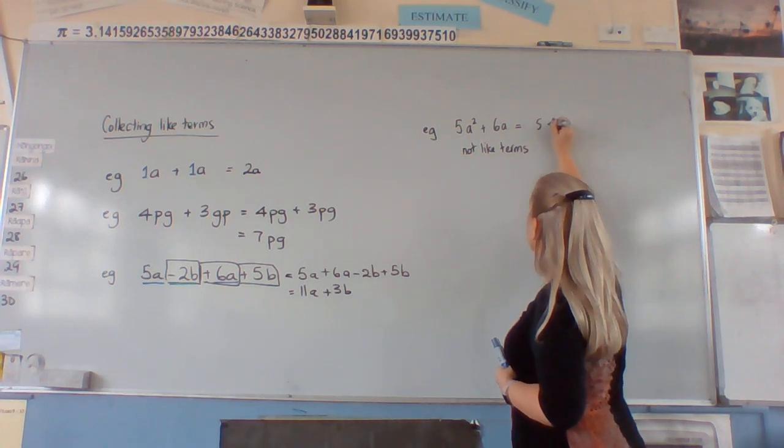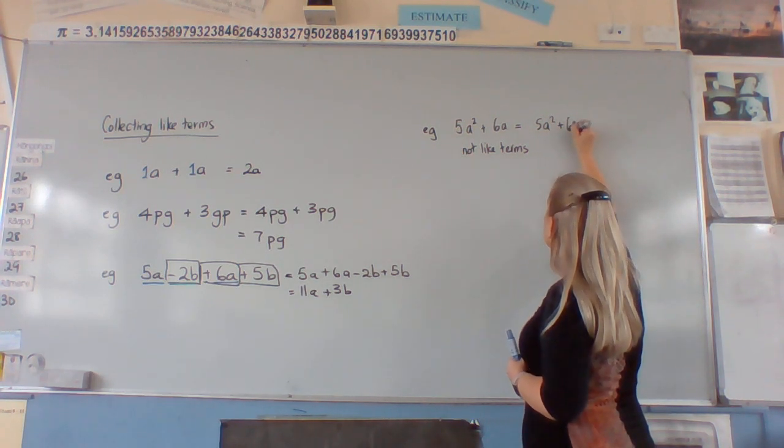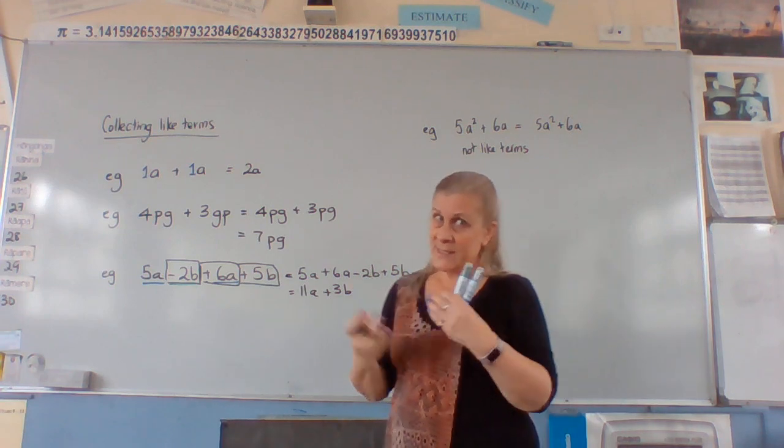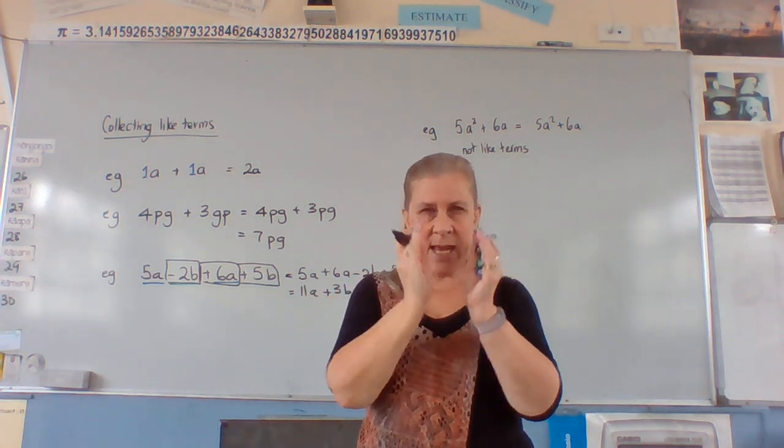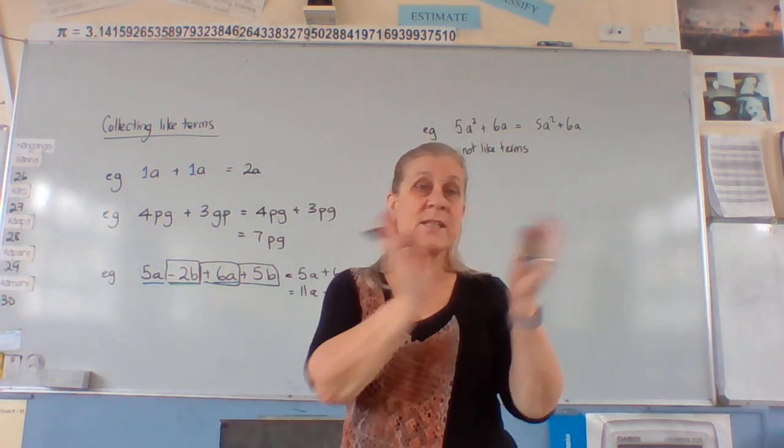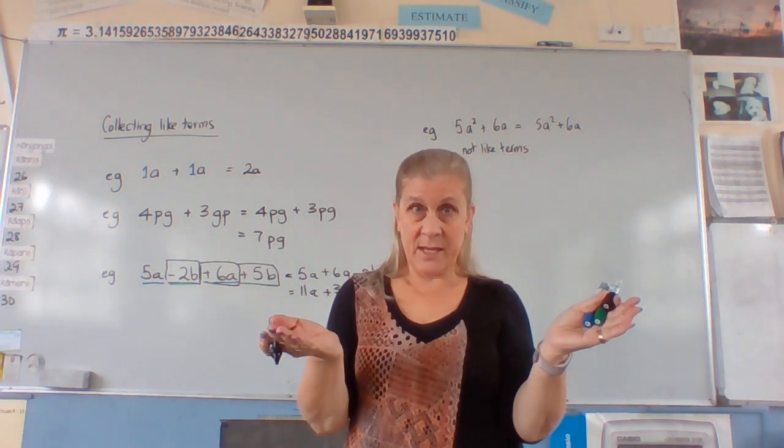They're not like terms. So our answer would just be this. So when we are collecting our like terms, we need to make sure they're exactly the same. So if one's got a squared, the other one has to have a squared to be able to add to it.